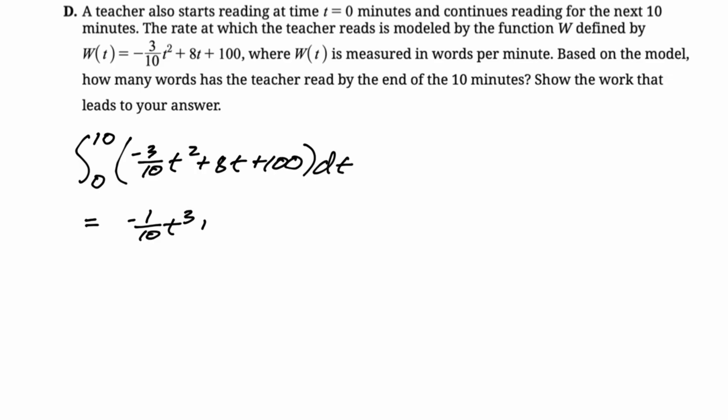So for the first part, the threes cancel. So you just get negative 1 tenth T cubed, then you're going to get 4T squared, then you get 100T. And we're evaluating from zero to 10.